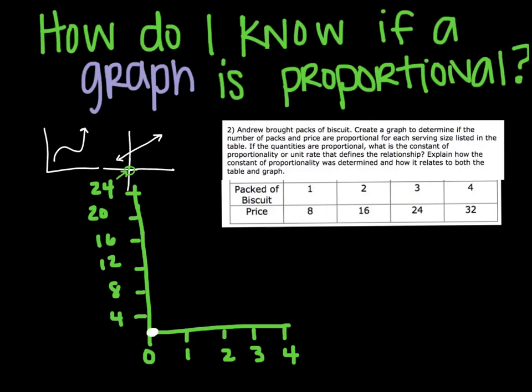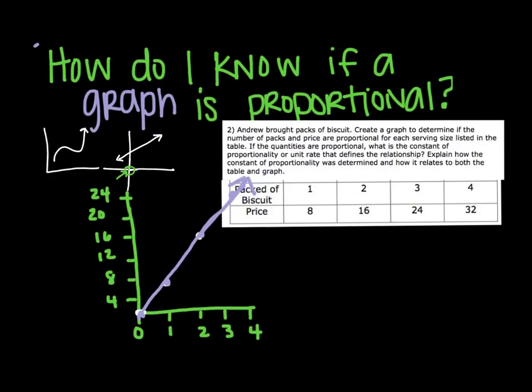So 0, 0 obviously is on there, because if I don't buy any biscuits, it's not going to cost me any money. If I buy one packet, it's going to be $8. Two packets is $16. Three packets is $24. And now I'm running out of space, so let me use a different color dot. And so now if I connect these lines, you can see that it does in fact make a straight line, and it does cross through the origin. And so I know that this is a proportional graph.